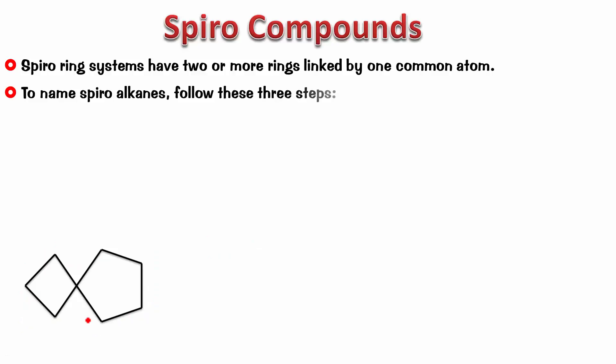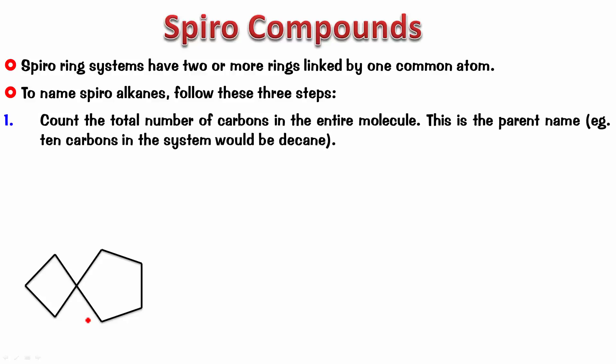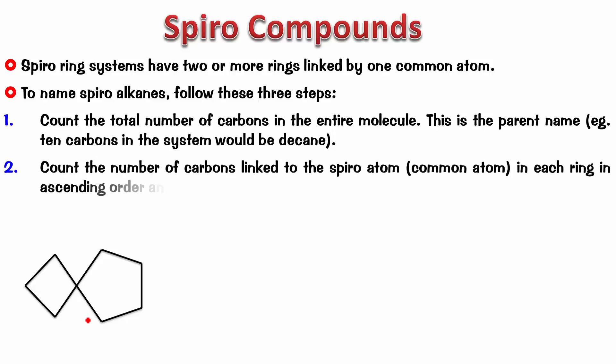So, to name a spiro alkane, follow the following steps. Count the total number of carbons in the entire molecule. This is the parent name. Example, ten carbons would obviously mean a decane. Count the number of carbon atoms linked to the spiro atom in each ring in ascending order, separated by a comma, and we use square brackets. Place the word spiro at the beginning of the name.